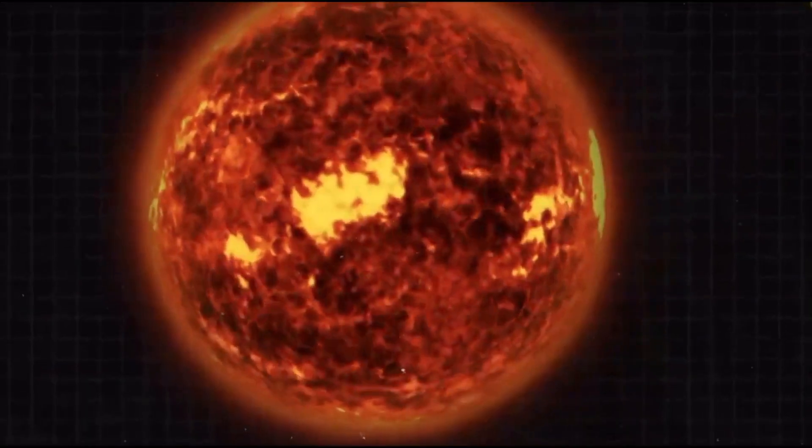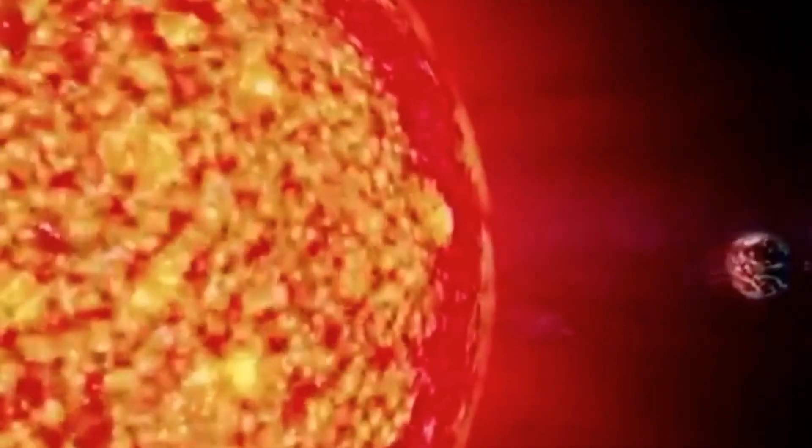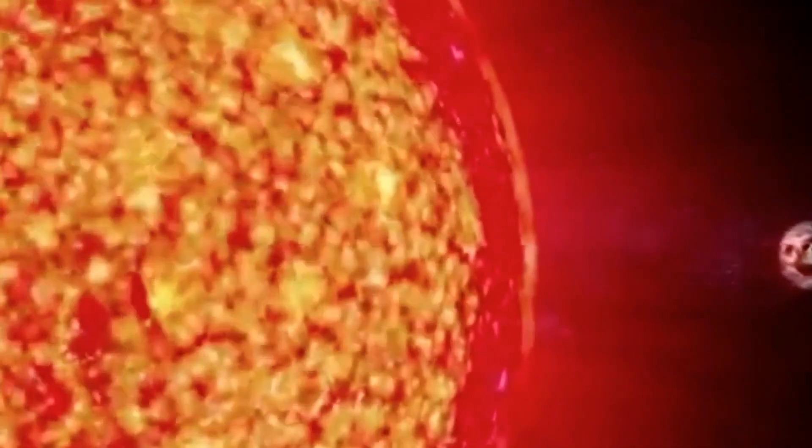The sun, as a yellow dwarf star, has an estimated lifespan of about 10 billion years. Since it is currently in the middle of its life cycle, over the next 5 billion years, it will undergo several significant transformations.